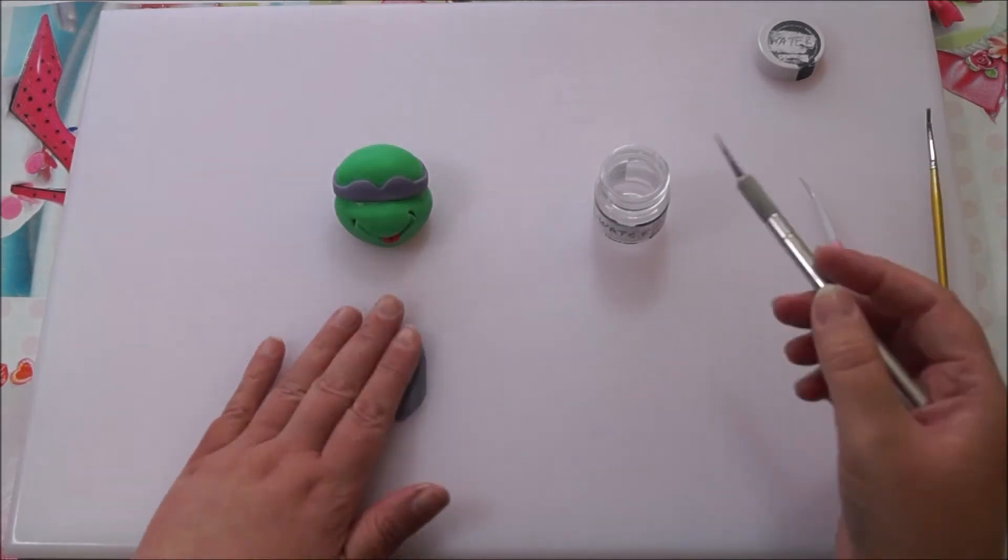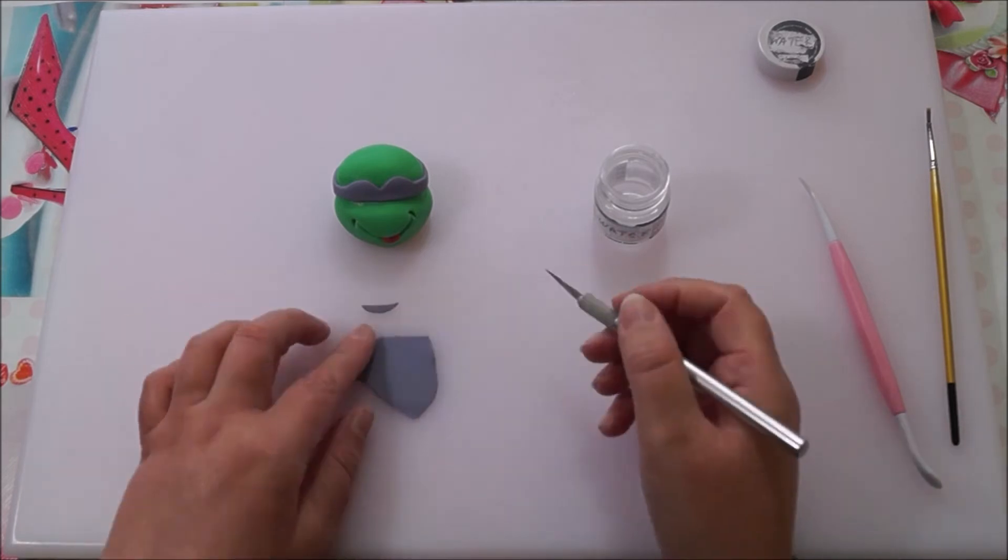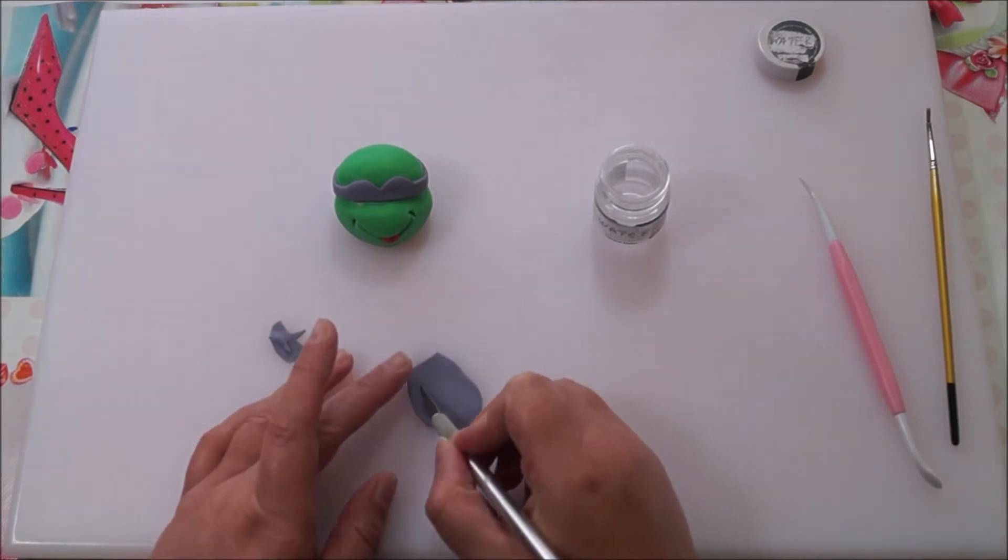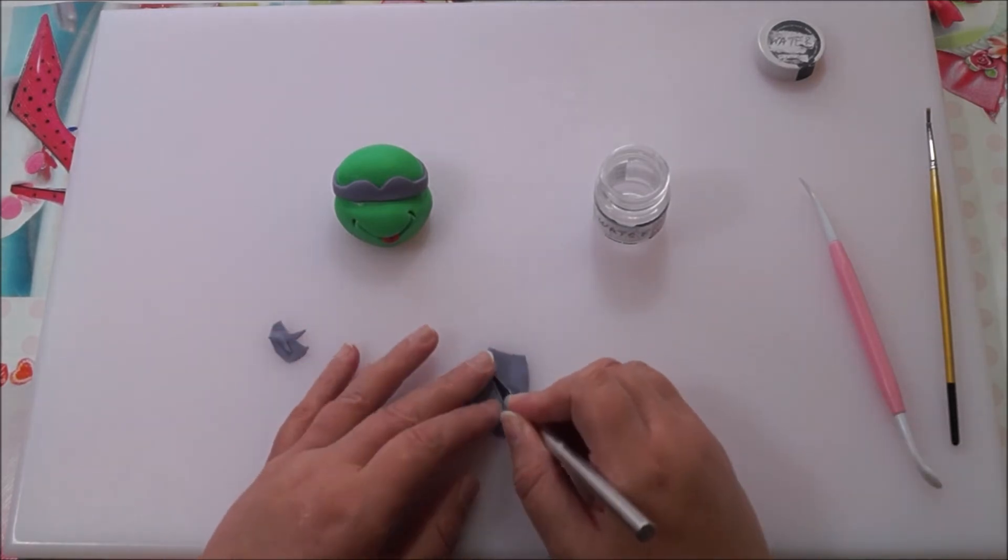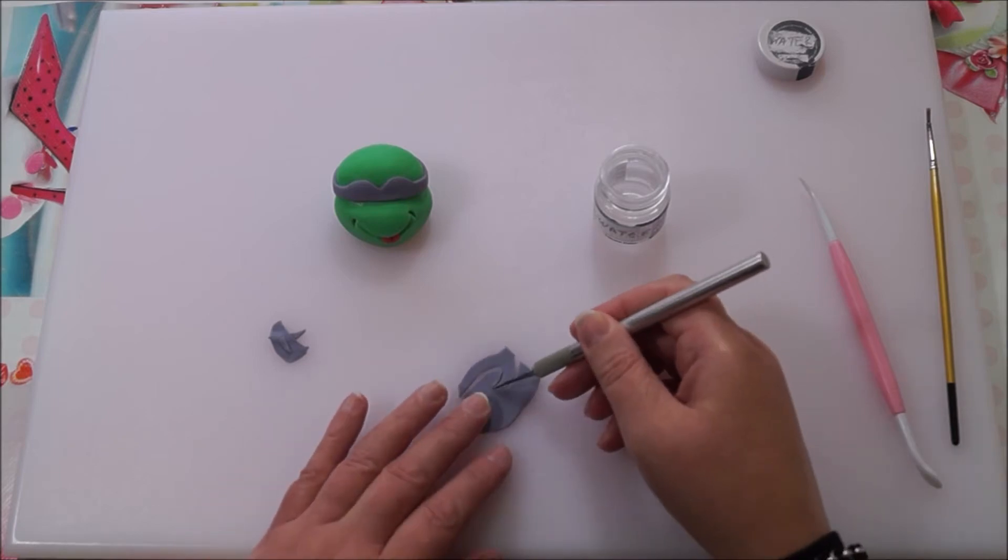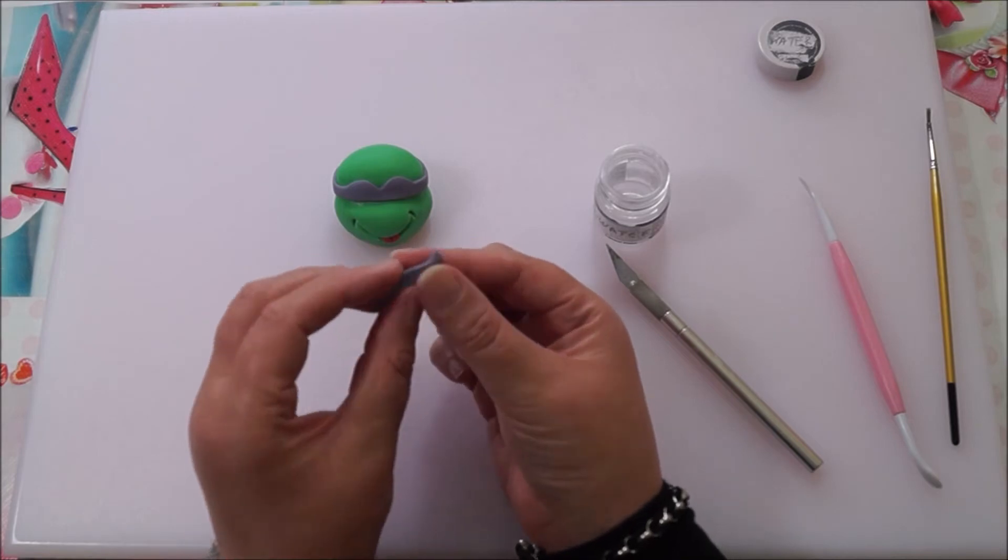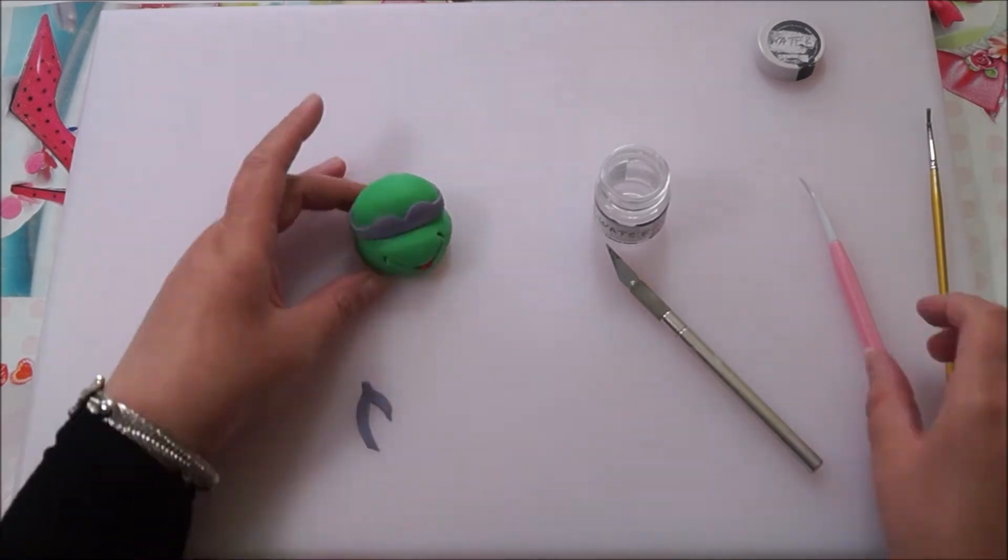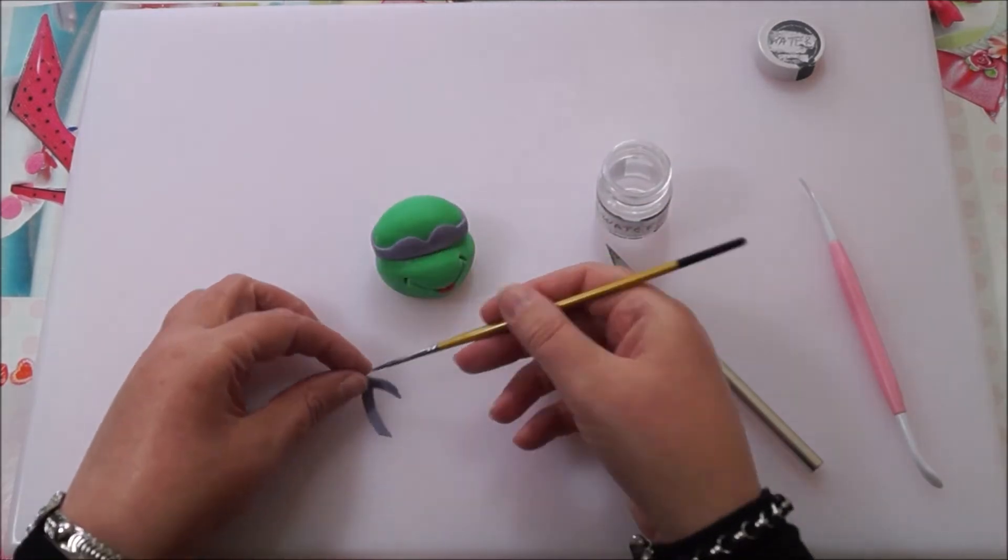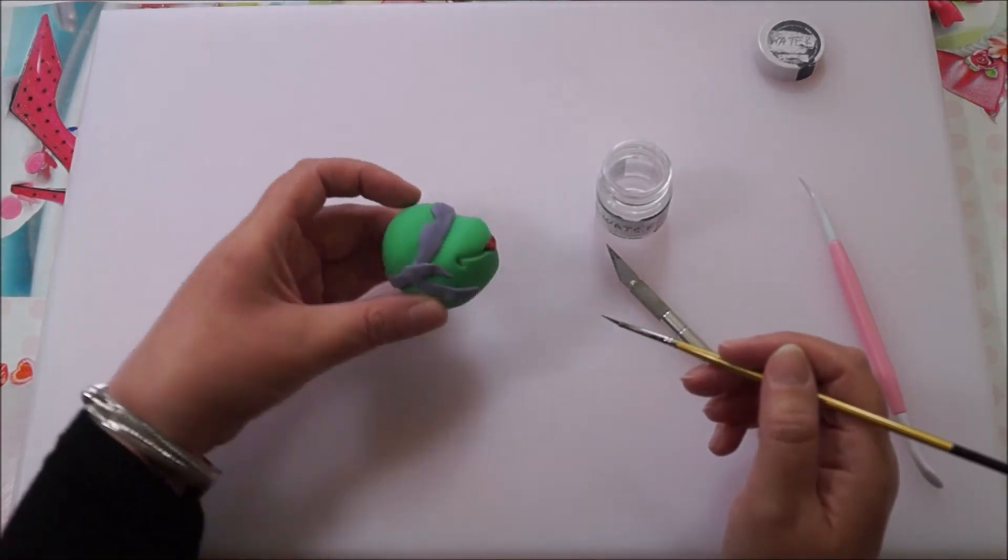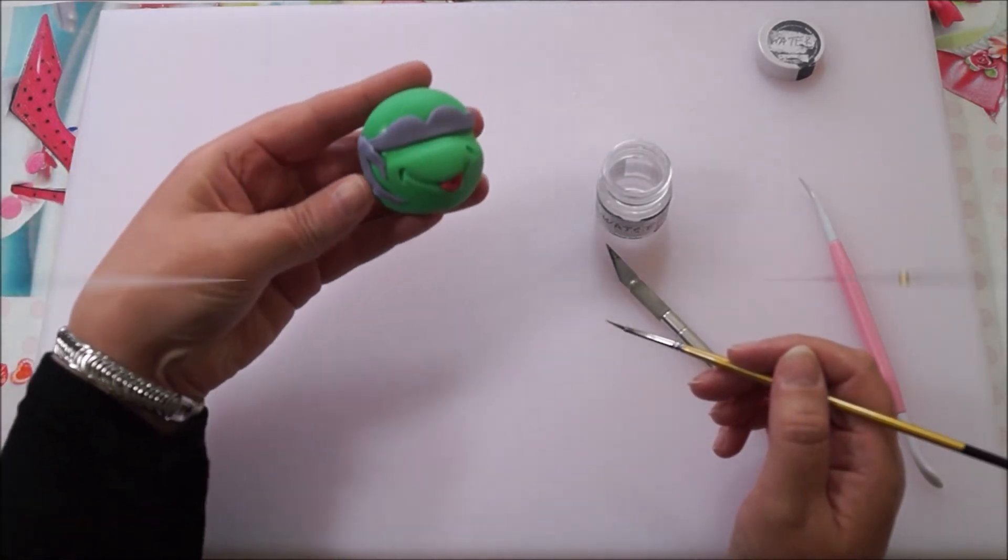Now I'm going to make the edge of the headband. Trim out a wishbone-size shape for the edge of the headband and smooth down the edges. Using a little bit of water, stick it on to either the left or the right side, and it should be looking something like this.